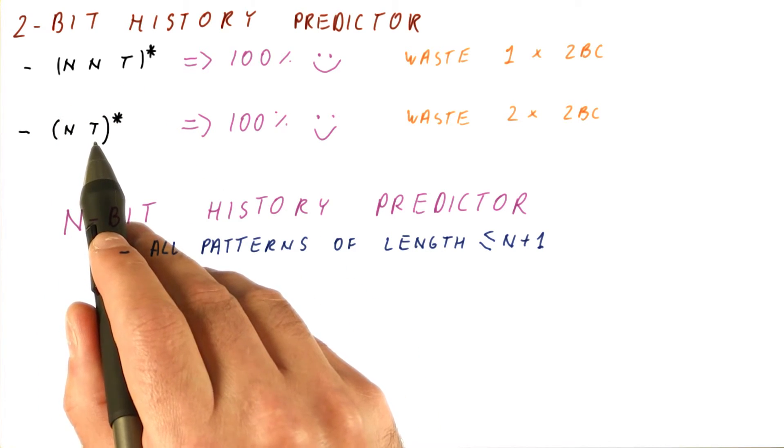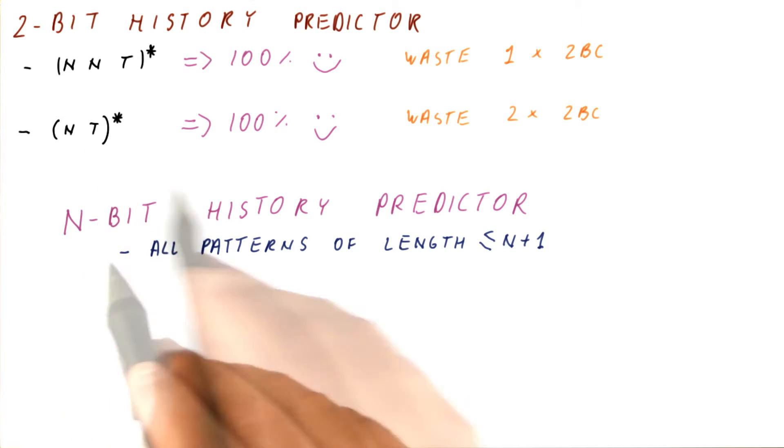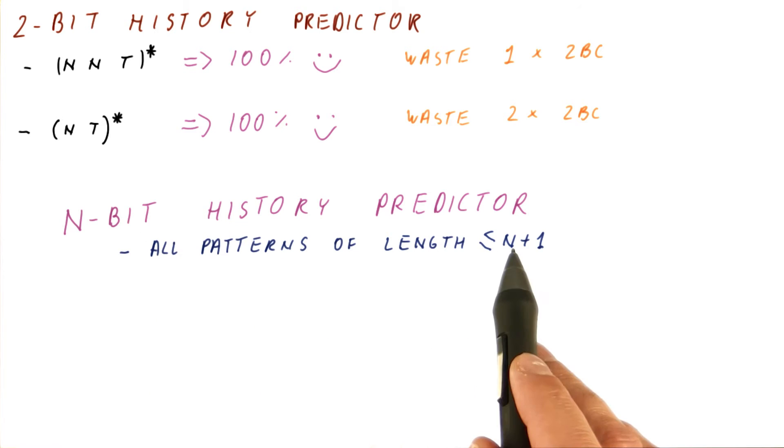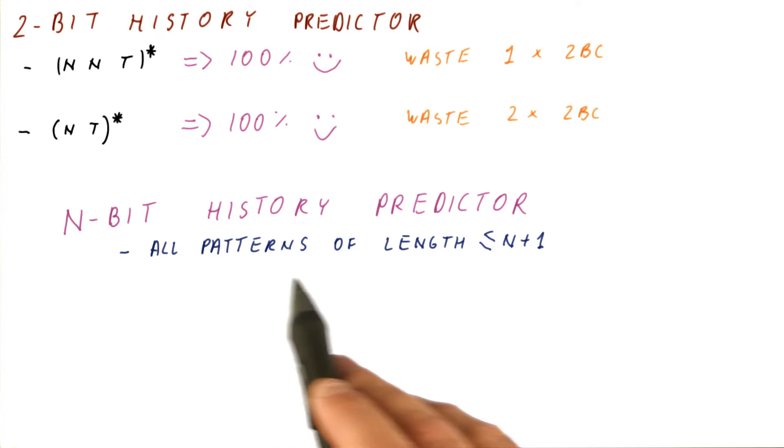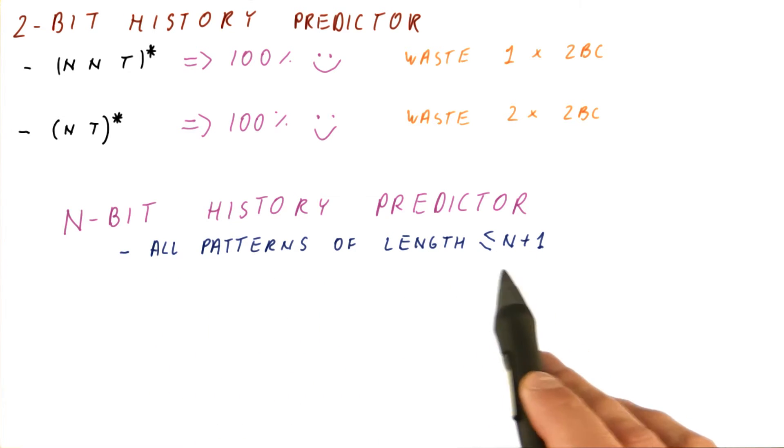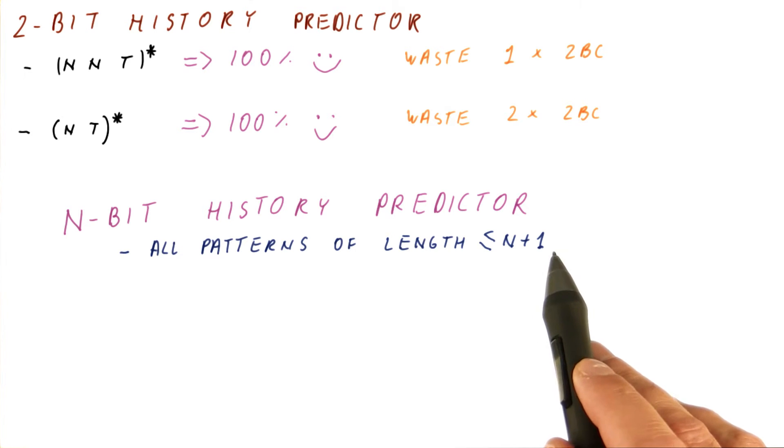Both of them, of course, can predict a pattern of length 1, which amounts to always taken or always not taken. In general, an n-bit history predictor will predict all patterns of length its history size plus 1 or less than that.